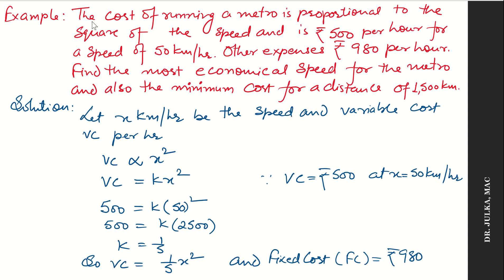Example 1. The cost of running a metro is proportional to the square of the speed, and is rupees 500 per hour for a speed of 50 km per hour. Other expenses are 980 rupees per hour. Find the most economical speed for the metro and also the minimum cost for a distance of 1500 km.